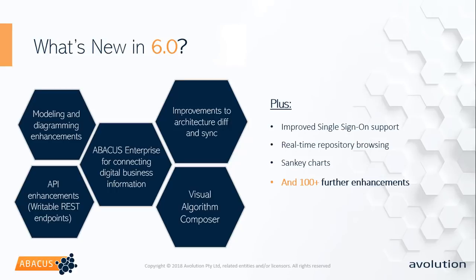There are also improvements in single sign-on support — we now support SAML 2 and OpenID in addition to WS Federation, with tweaks to handle different systems. We've built real-time repository browsing into the new enterprise platform. The enterprise platform includes a number of interesting visualizations including the Sankey chart, which shows a flow of information between entities. Altogether there are over 100 new enhancements in 6.0 — it's been a lot of work but very satisfying, and I'm very excited that everyone will have the chance to use these game-changing features.